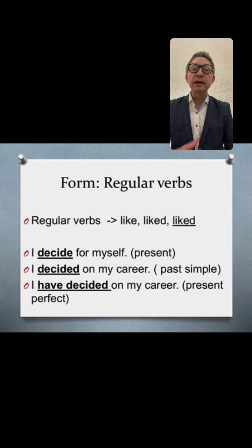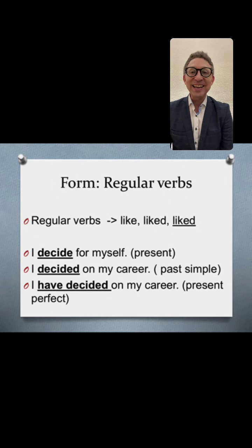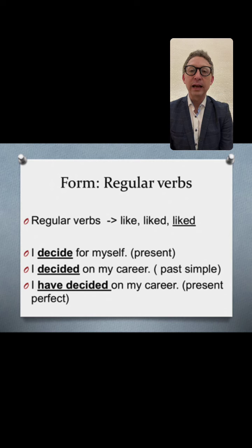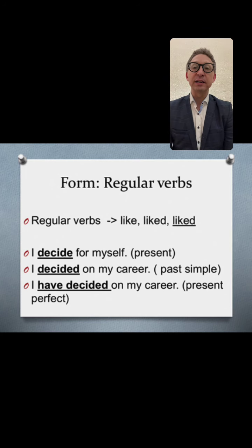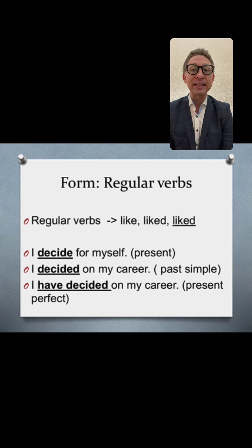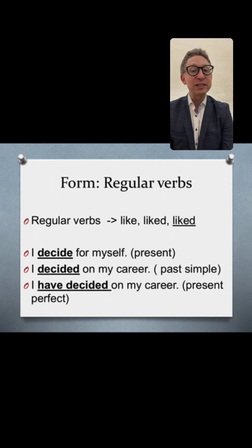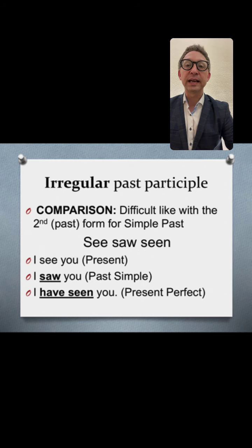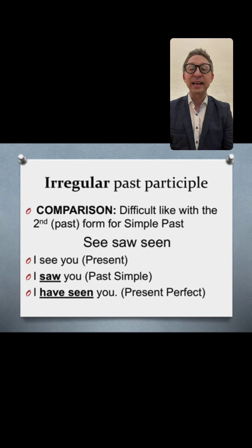The regular form is straightforward. For example: like, liked, liked — regular verbs add -ed at the end. With 'decide': I decide for myself (present), I decided on my career (past simple), I have decided on my career (present perfect). So 'have decided' — that's a regular verb, not very complicated in terms of spelling.